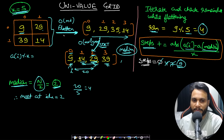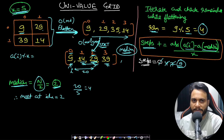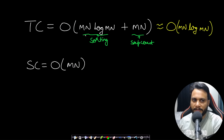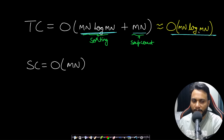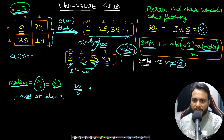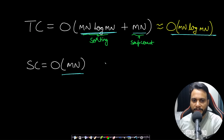If a univalue grid is not possible, return minus one during the flattening process. The most time-consuming step is sorting, which is O(MN log MN). The step count iteration is O(MN) and flattening is also O(MN), so the overall time complexity is O(MN log MN). The space complexity is O(MN) because we flatten and store the grid in a single-dimensional array.